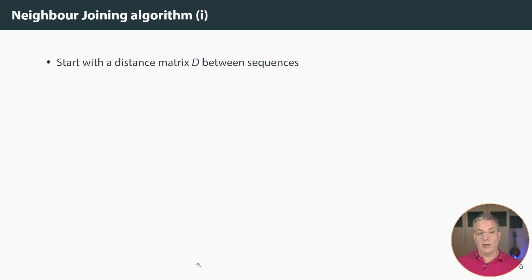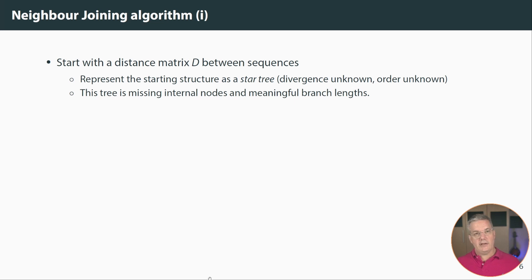Okay let's look at the actual algorithm. We start with some distance matrix between sequences. We call this d and this represents all of the distances between the sequences. We start not knowing the structure of the tree so we just represent kind of an unresolved tree as a star with all of the sequences being related in some structure but we don't know the structure. We don't know the order. It's missing all of the internal nodes. It's basically only leaves and it's missing any meaning to all the branch lengths.